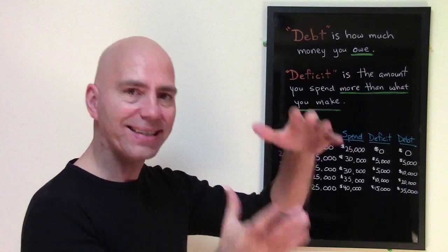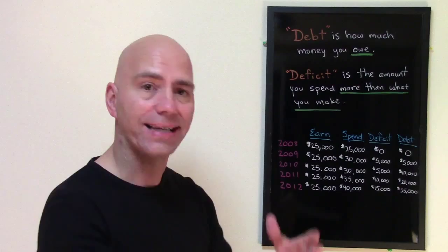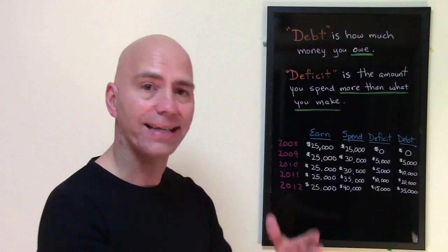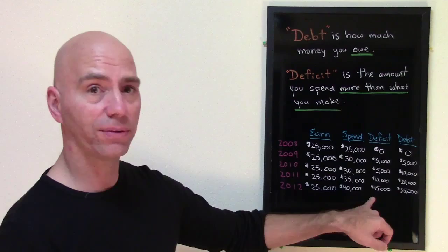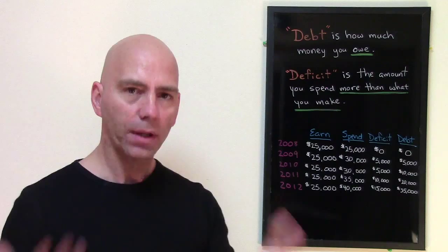So this amount — the debt — is the deficit added to the previous year's debt. So here we have zero plus $5,000 is $5,000. $5,000 plus $5,000 is $10,000. $10,000 plus $10,000 is $20,000. And $20,000 plus $15,000 is $35,000. So that, my friends, is the difference between the debt and the deficit.